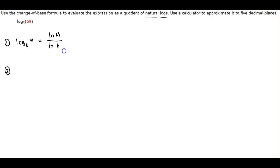So if we look at our example, we have the log of base 5 of 69. So that would equal the natural log of 69 divided by the natural log of 5. This is considered an exact solution.